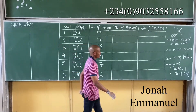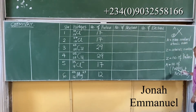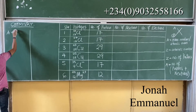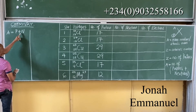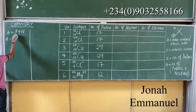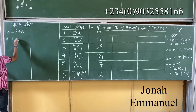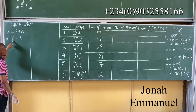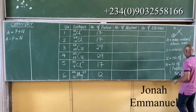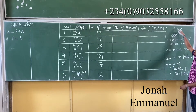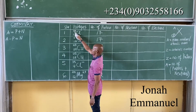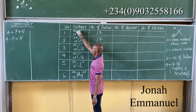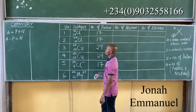Next, since mass number A equals protons plus neutrons, we get: number of neutrons = mass number minus number of protons. So for Chlorine-35: 35 minus 17 equals 18 neutrons. For Chlorine-37: 37 minus 17 equals 20 neutrons. For Copper-63: 63 minus 29.